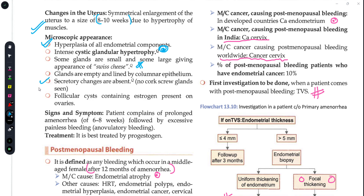Therefore, the cork-screw glands normally seen in menstruation are absent here. Follicular cysts containing estrogen are present on the ovaries. Regarding signs and symptoms, the patient presents with prolonged amenorrhea, lasting around 6 to 8 weeks — almost 2 months of amenorrhea-like condition — followed by painless bleeding, as this is anovulatory.